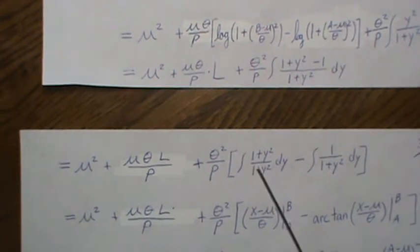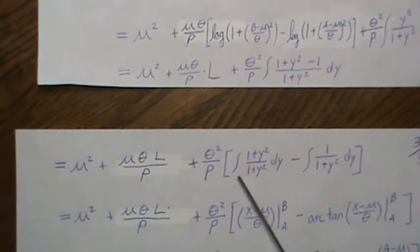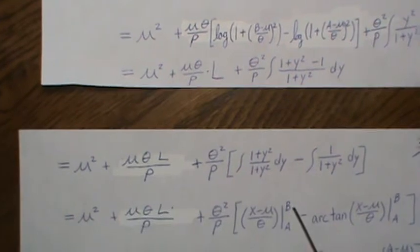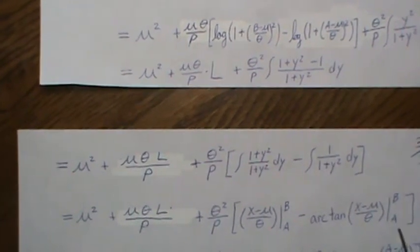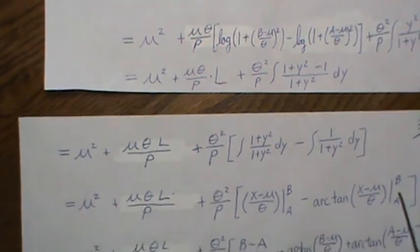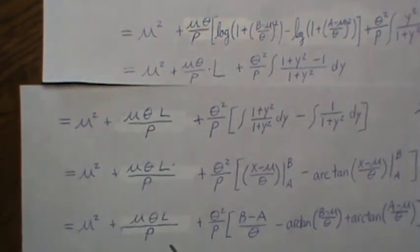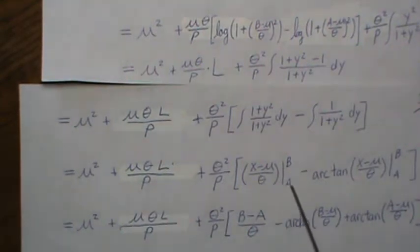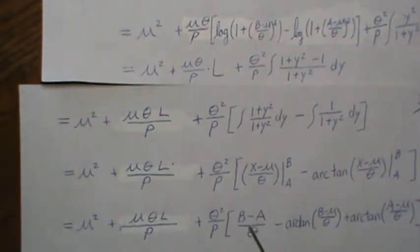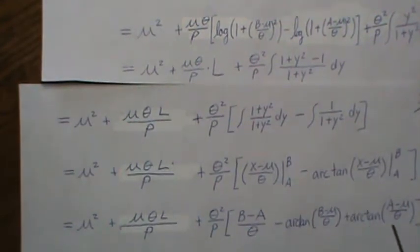So the anti-derivative of 1 is just Y, and then we evaluate it at our limits. This is arctangent, and we evaluate it at our limits. So everything comes down, and then put in B, and then minus put in A, you get this. And then the arctangent becomes this, so plus arctangent at that.